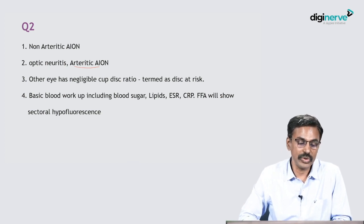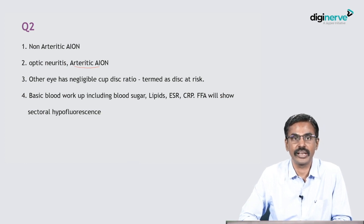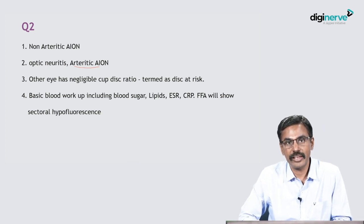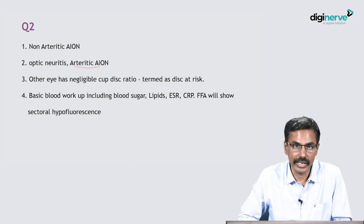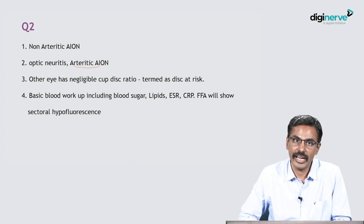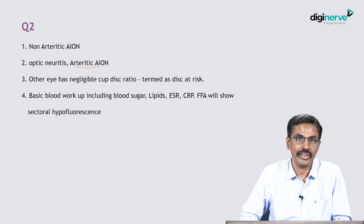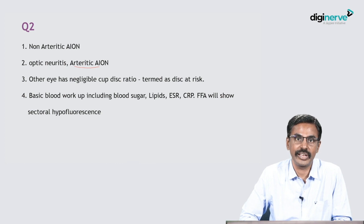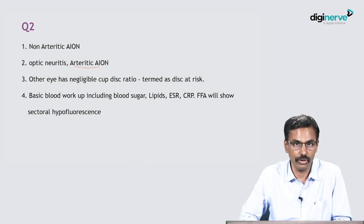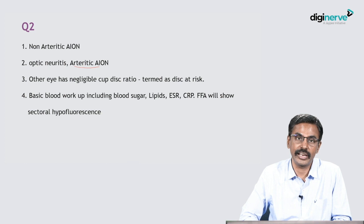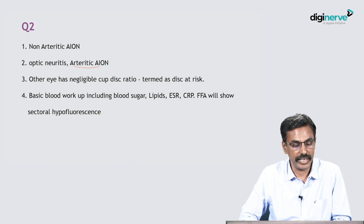How is it different from arteritic AION? Arteritic AION is usually seen in the very elderly. They may have dilated, superficial, tender superficial temporal arteries, and ESR and C-reactive protein may be raised. This is a relatively younger woman — just a 50-year-old — which falls outside the category of arteritic AION.